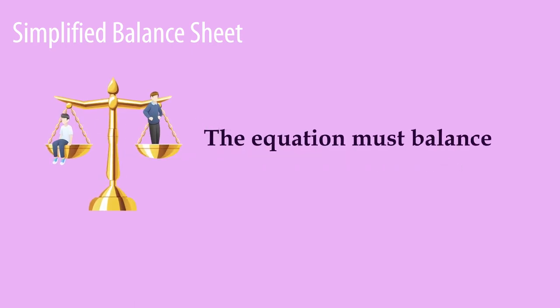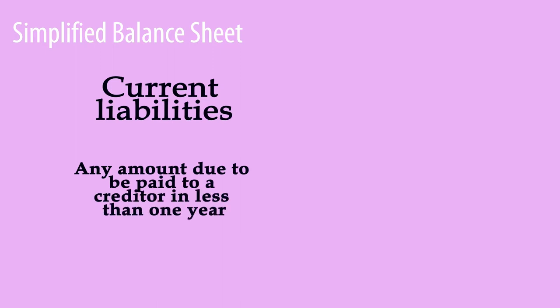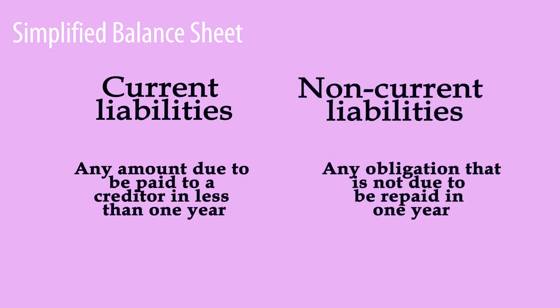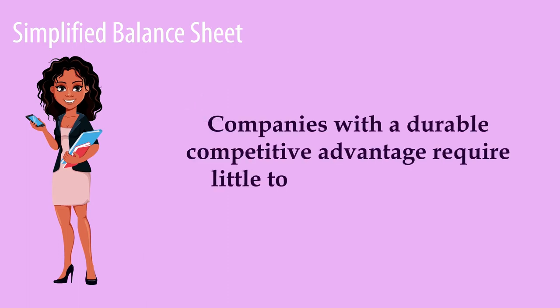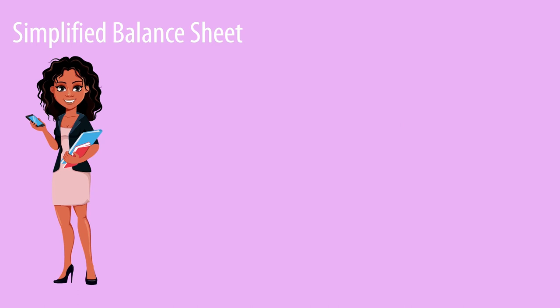On the balance sheet, liabilities are presented in order of when they are to be paid. Current liabilities such as short-term debt and accounts payable are to be paid within one year, and any portion of long-term debt due within one year is also listed there. Long-term liabilities are not due within the year and are often a sizable liability. Warren carefully scrutinizes how much short-term and long-term debt a company has. He shies away from companies with a higher short-term to long-term debt ratio. Companies with a durable competitive advantage require little to no long-term debt — they are self-financing from their business operations. Companies with a durable competitive advantage have enough earnings to pay off all their long-term debt in three to four years.